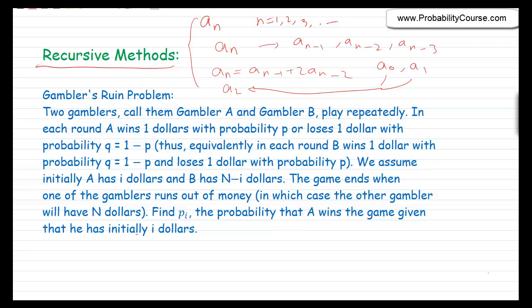Here is the problem. Two gamblers — call them Gambler A and Gambler B — play repeatedly. In each round, A wins $1 with probability P and loses $1 with probability Q = 1 − P. It's like we toss a coin in each round, a coin for which the probability of heads equals P. If the result is heads, A wins $1; if tails, A loses $1. We assume initially A has i dollars and B has n − i dollars, so the total amount of money they have is n dollars. The game ends when one of the gamblers runs out of money, in which case the other gambler has all n dollars.